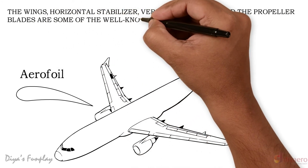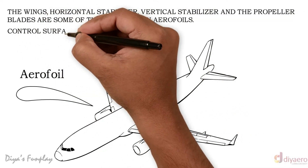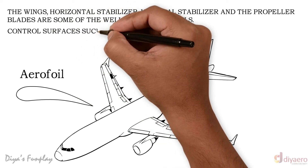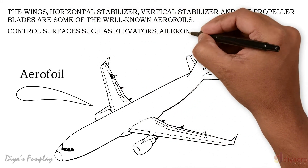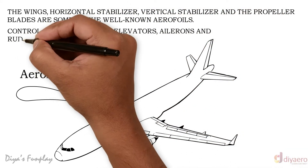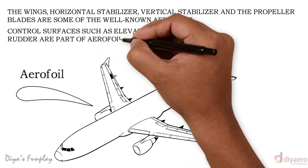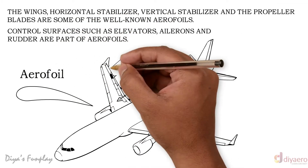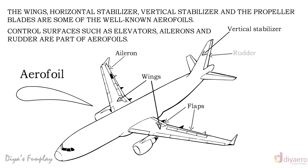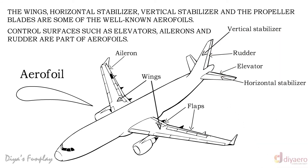The wings, horizontal stabilizer, vertical stabilizer, and propeller blades are some well-known aerofoils. Control surfaces such as elevators, ailerons, and rudder are also part of aerofoils. Moving these control surfaces varies the shape and forces generated by the aerofoil, enabling a pilot to manoeuvre and control the aircraft.